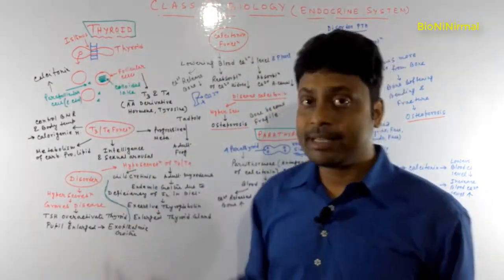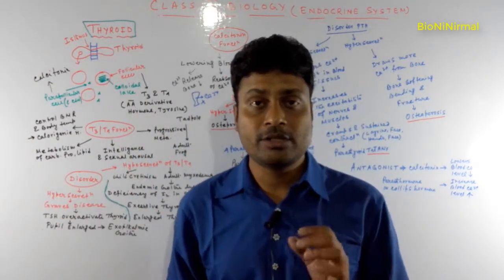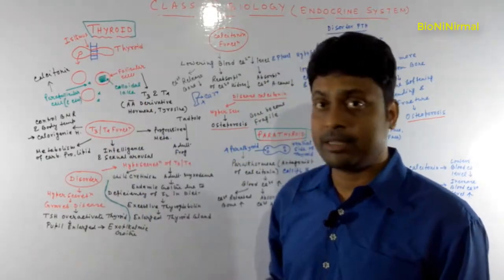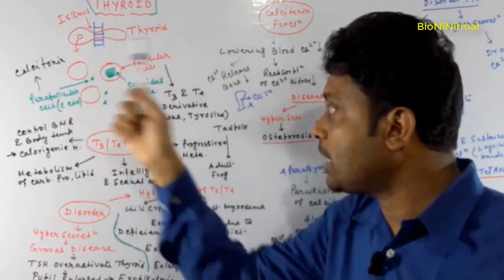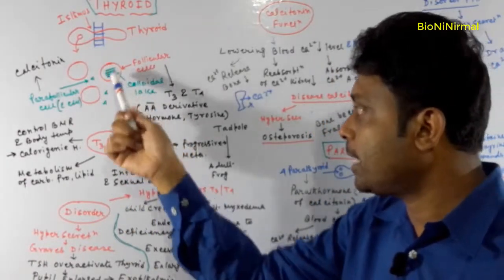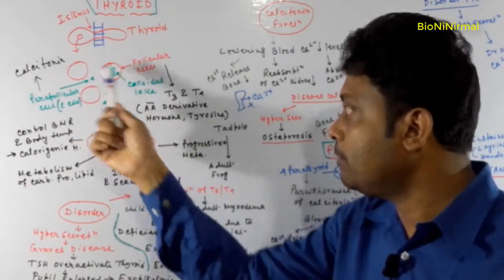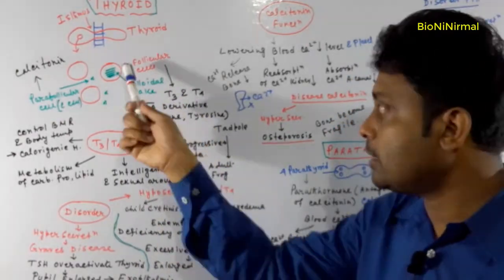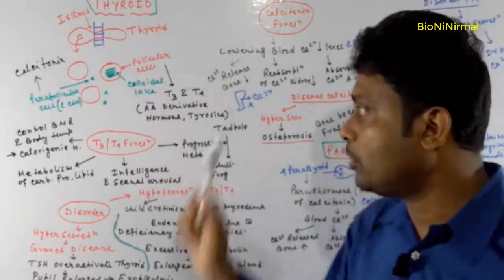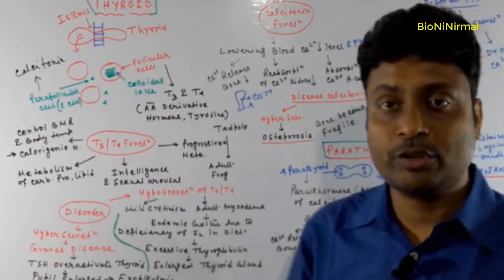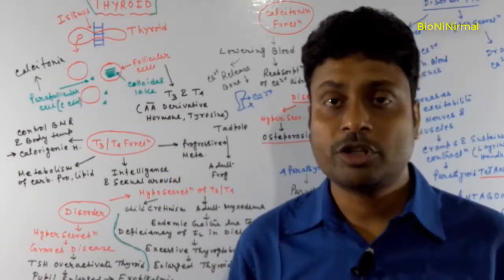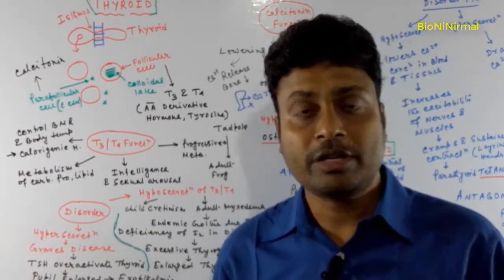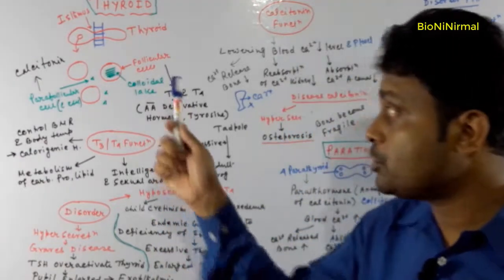The thyroid gland is the largest endocrine gland and is situated on the two sides of the tracheal ring, connected by the isthmus. If we take a portion of the thyroid gland, we can see that many follicles are present. These follicles are made up of follicular cells, and inside each follicle there is colloid, which actually stores the thyroxine hormone — the T3 and T4 — and also monoiodotyrosine and diiodotyrosine.